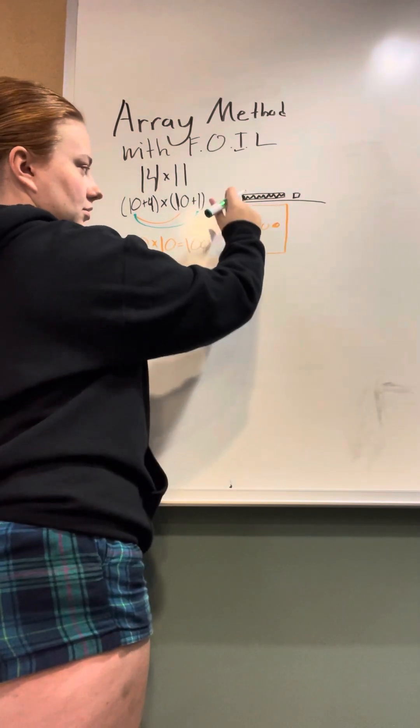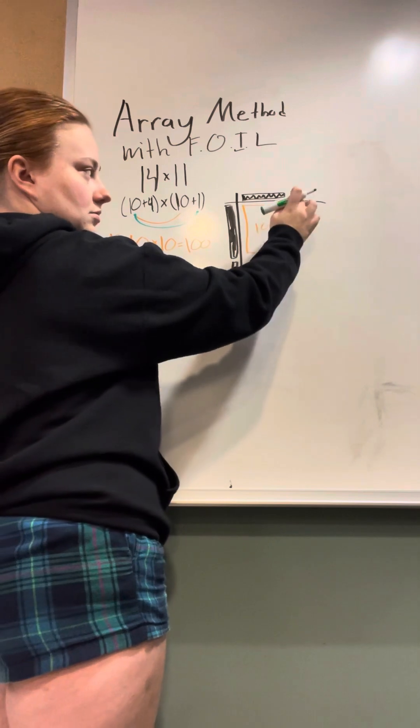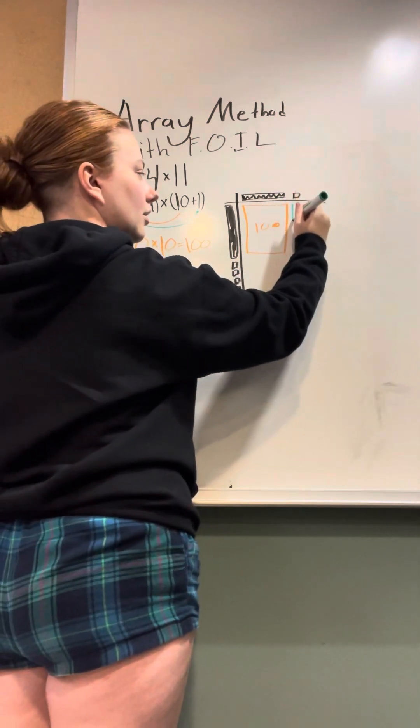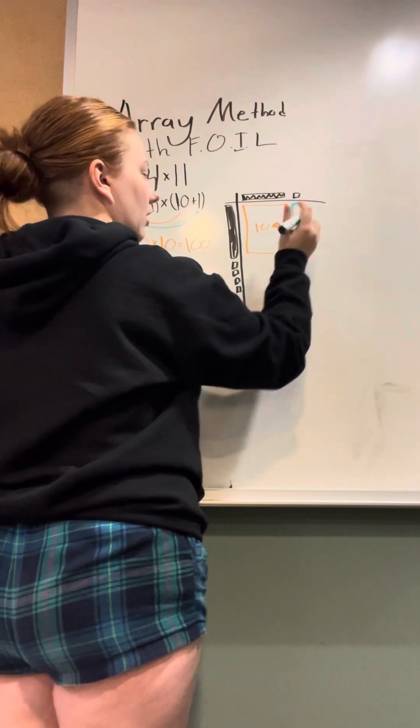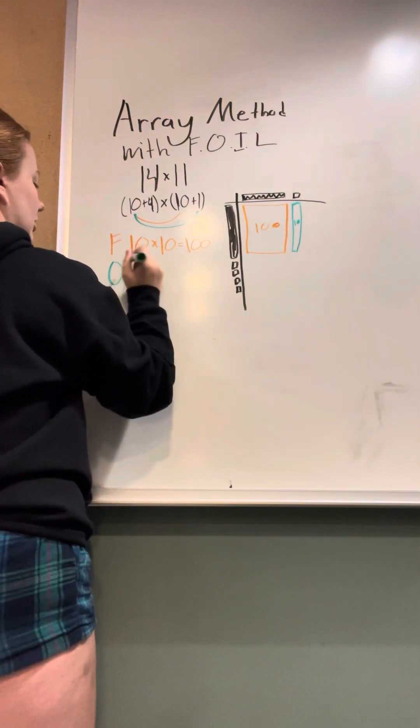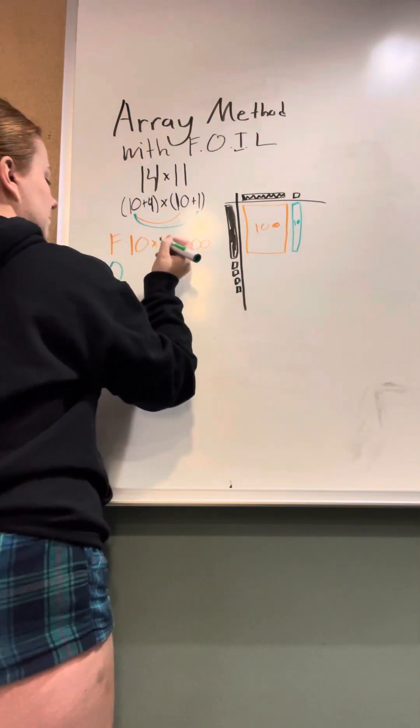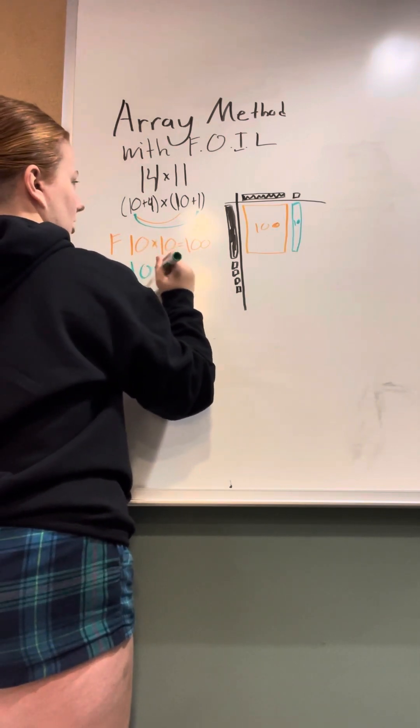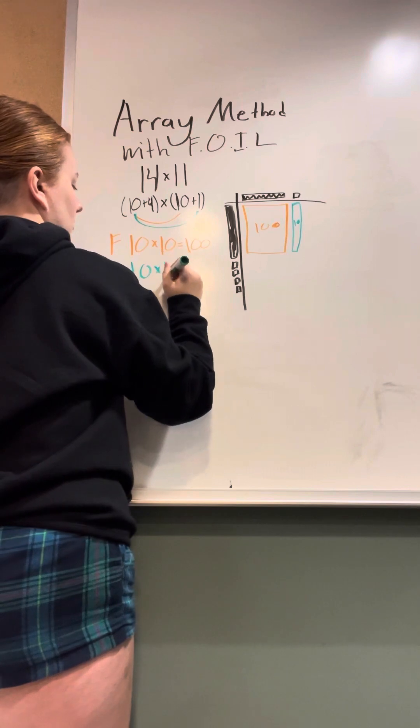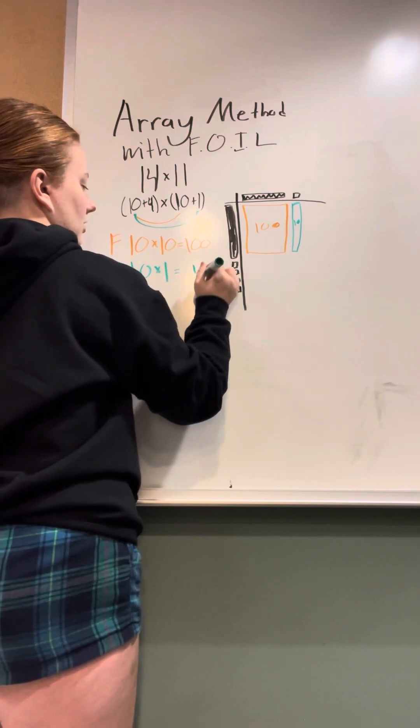And then for that, we just draw a long. And then over here, we do O for outer, and then we do 10 times 1, which equals 10.